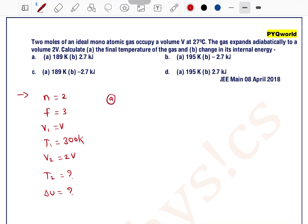Now see, first we will solve for final temperature. We know that for adiabatic process, the equation is temperature into volume to the power gamma minus 1 is equal to constant.